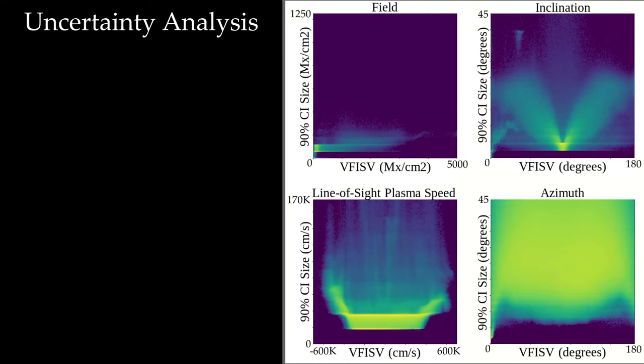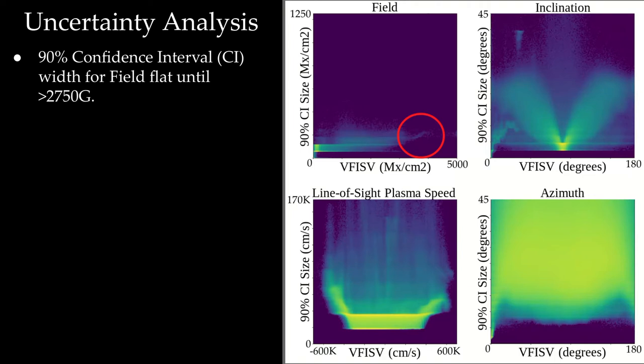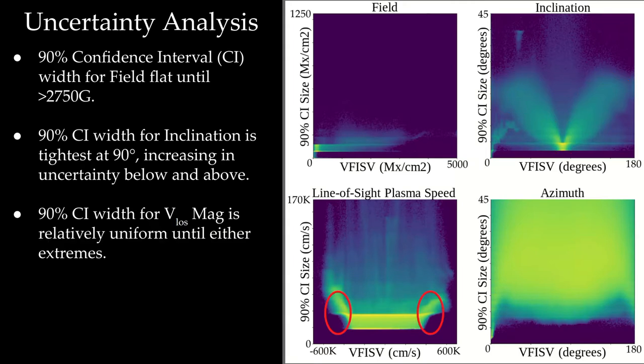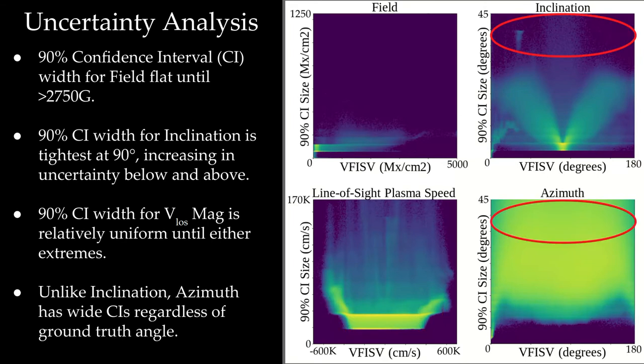So here we have an uncertainty analysis. This is basically, you can see this 90% confidence interval size. And the size of the confidence interval stays relatively small until we get to these high field regions, which if you remember, we don't necessarily do that grade on. The size of this confidence interval for inclination also is really interesting because it's small near 90 degrees, but it's large as you go further and further away in either direction. Line of sight velocity magnitude is similarly small until the edges of the prediction ranges. And azimuth is interesting because it has a very wide confidence interval across all of the degrees, which I think reflects the fact that there's a lot of noise and azimuth angle in the low field strength regions of the disc.